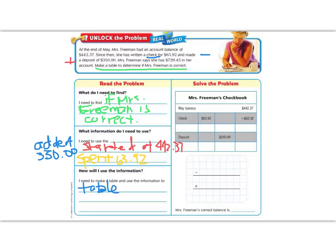A table is just an organization like you see on the right of adding and subtracting to make sure that we are right. So if we look here, we have the balance, $442, and then we subtracted the check, $63.92, and then we added $350. So let's go ahead and line all those numbers up and do the work.